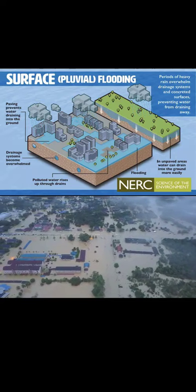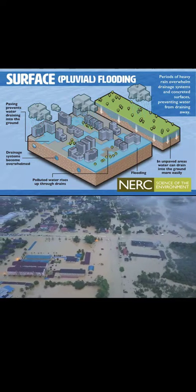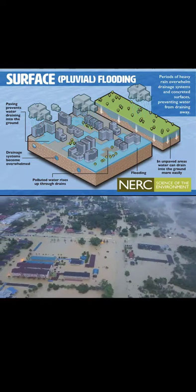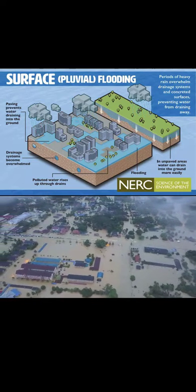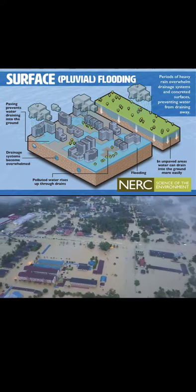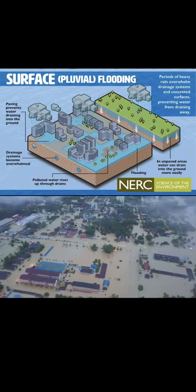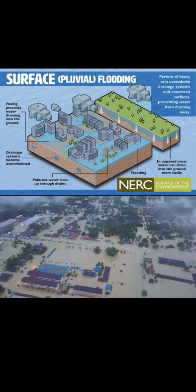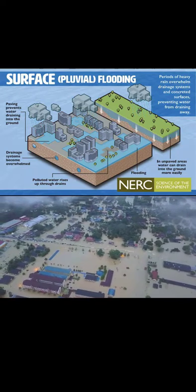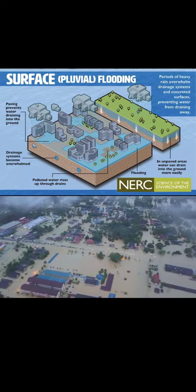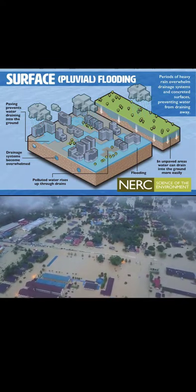This can lead to flooding of streets, basements, and low-lying properties. Pluvial flooding can also occur in rural areas where the ground is not able to absorb rainwater quickly enough.